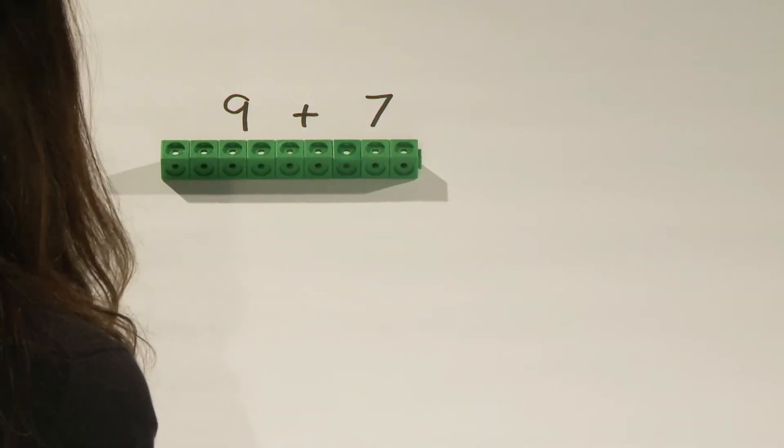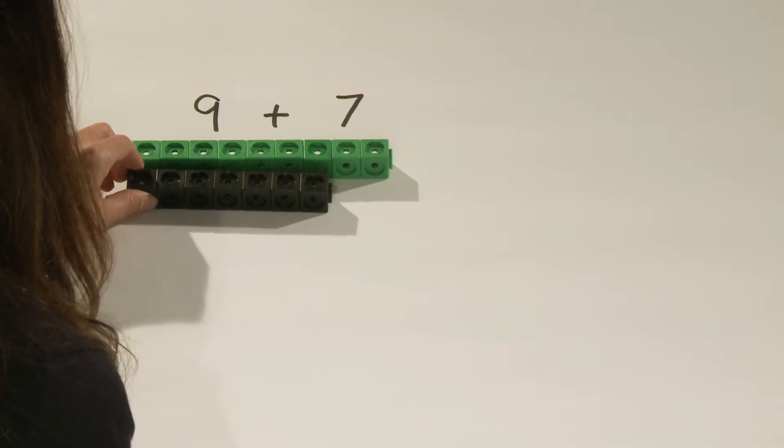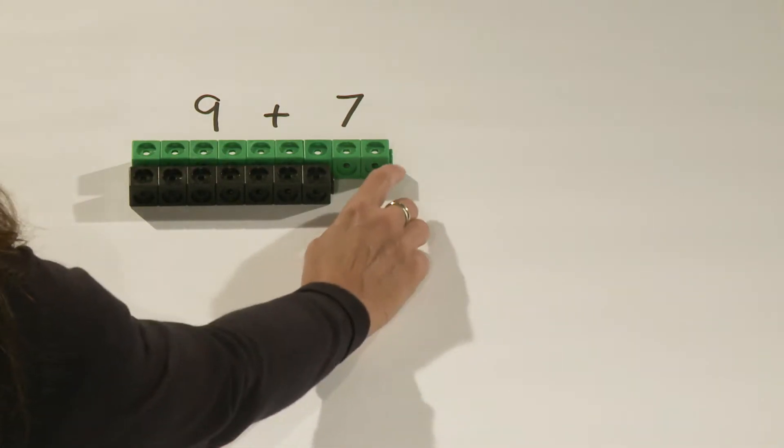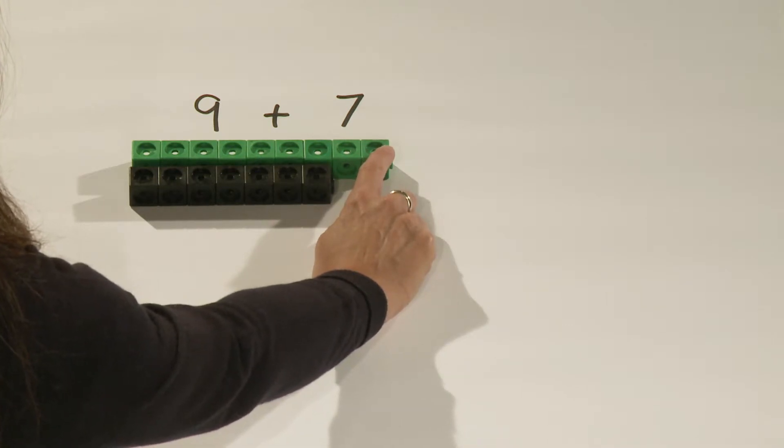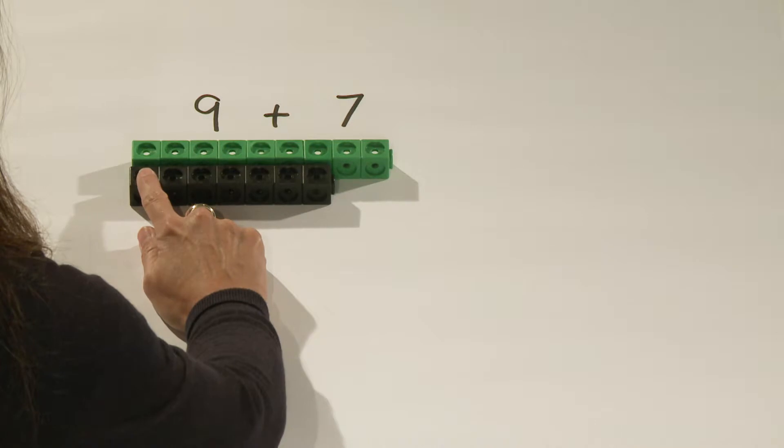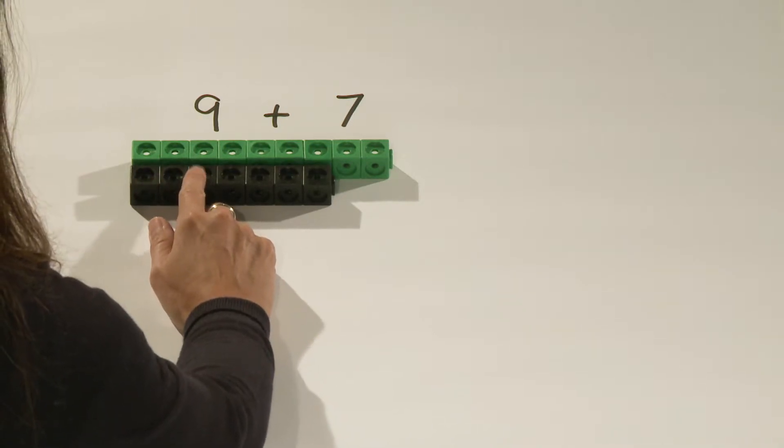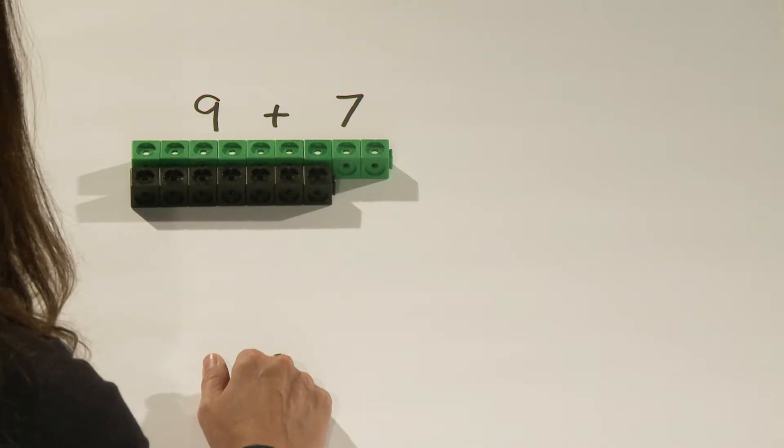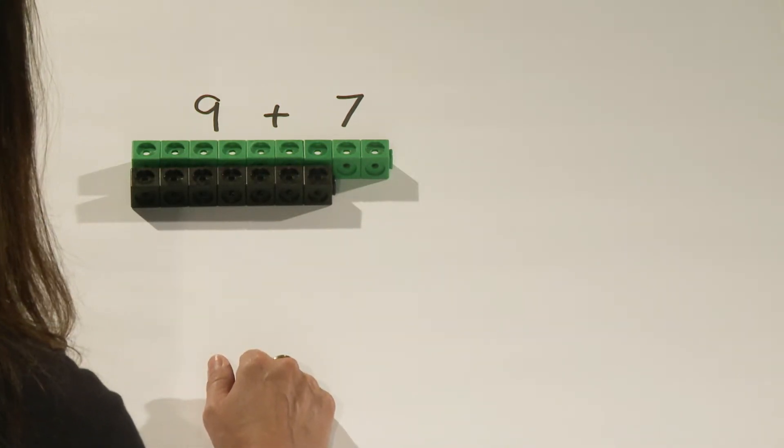We can build the number 9, and we can build the number 7. Students can start by counting on with the number 9, and then count on 10, 11, 12, 13, 14, 15, 16 to find out that the sum of 9 plus 7 is 16.